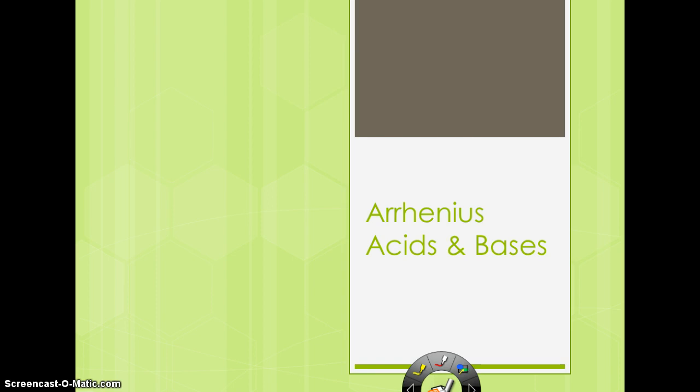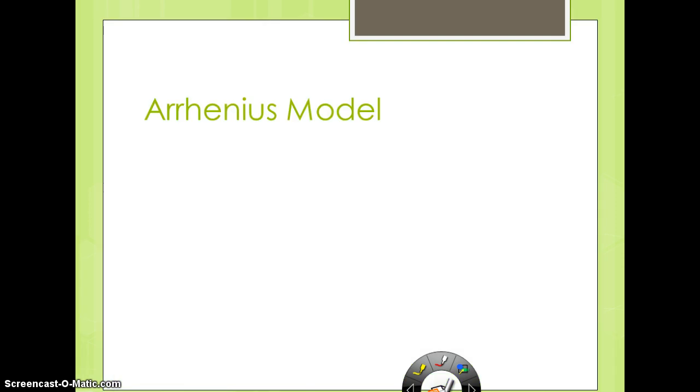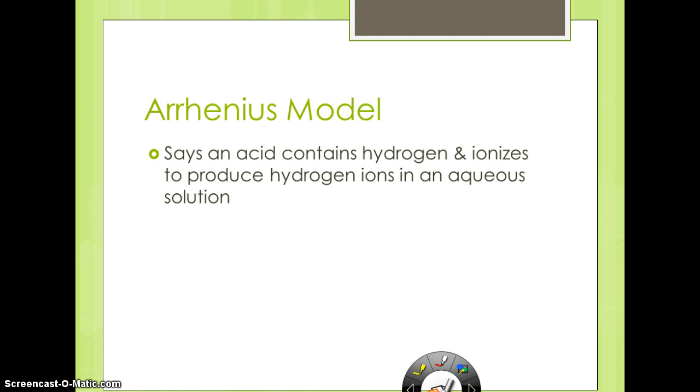The first type is the Arrhenius acid or base, named after the guy that came up with the concept. The Arrhenius model says that an acid contains a hydrogen and ionizes to produce hydrogen ions in an aqueous solution. So if you have an acid, there has to be a hydrogen present. When you put it in water, you're going to get hydrogen ions. So hydrochloric acid, when you put it in water, is going to separate into hydrogen and chloride.